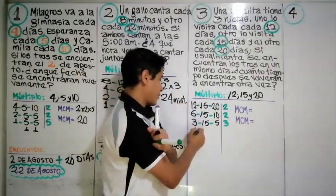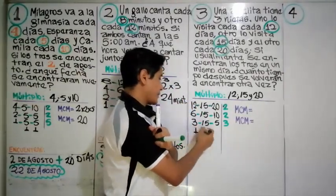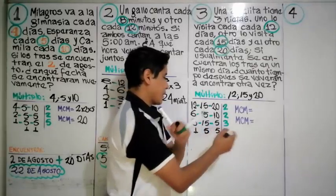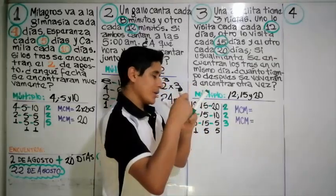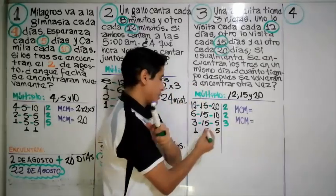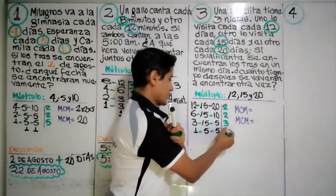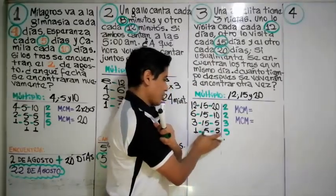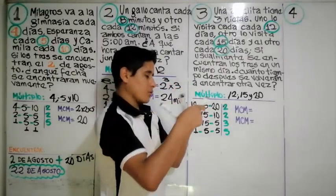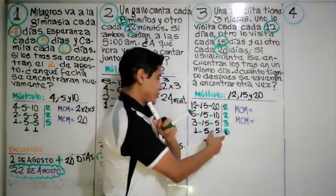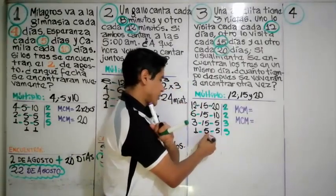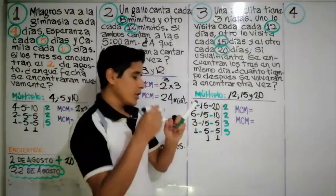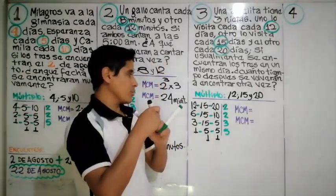Dividido entre tres: uno y cinco. Finalmente dividimos entre cinco: uno queda unito y cinco queda unito. El mínimo común múltiplo es dos al cuadrado por tres por cinco.